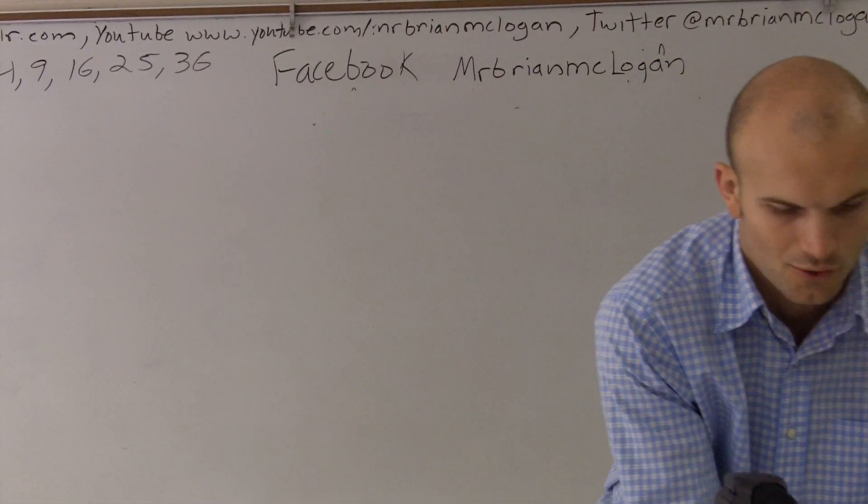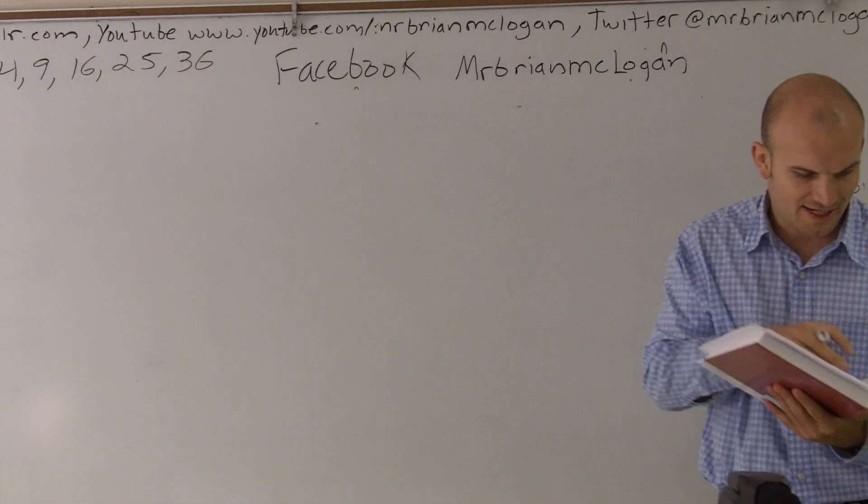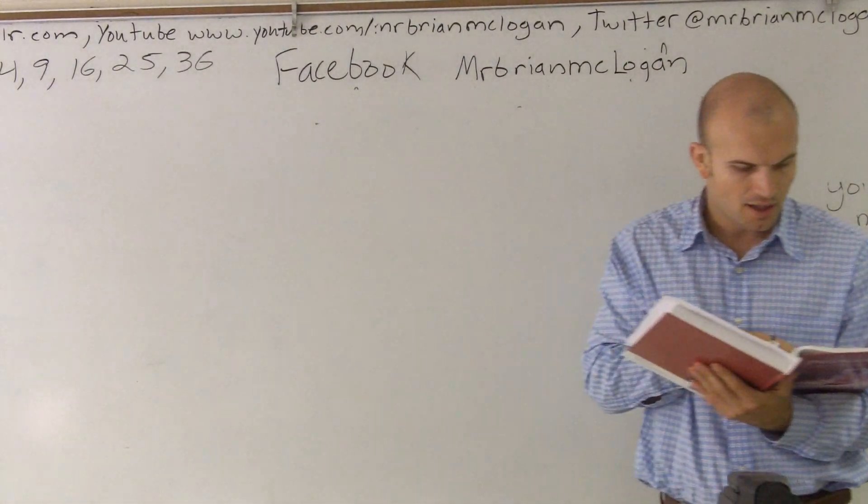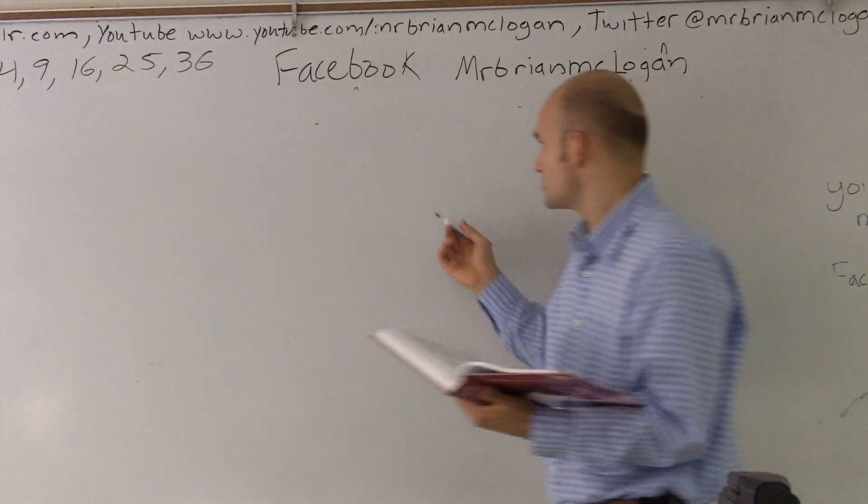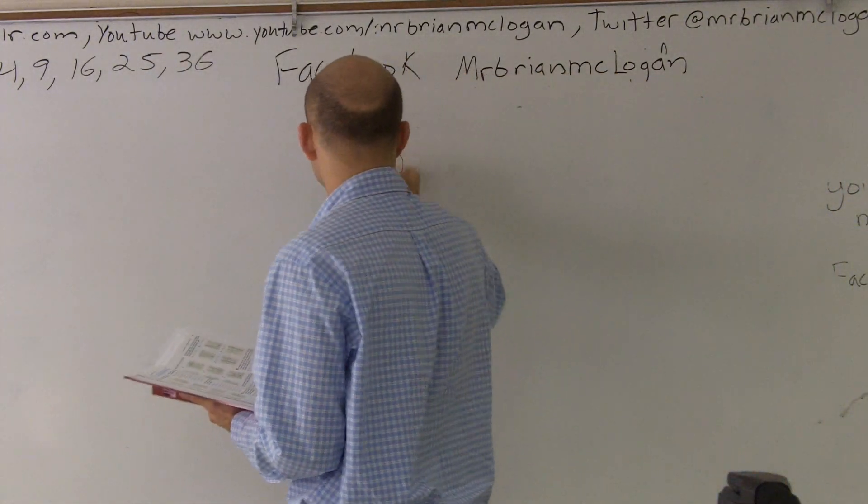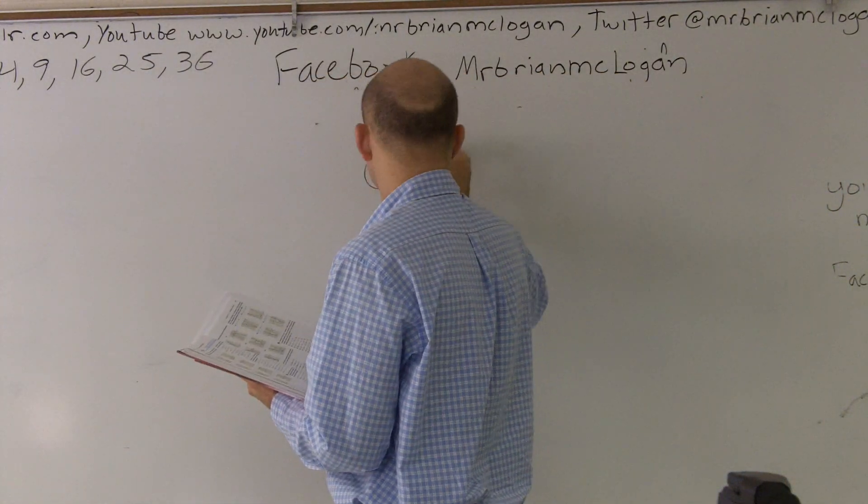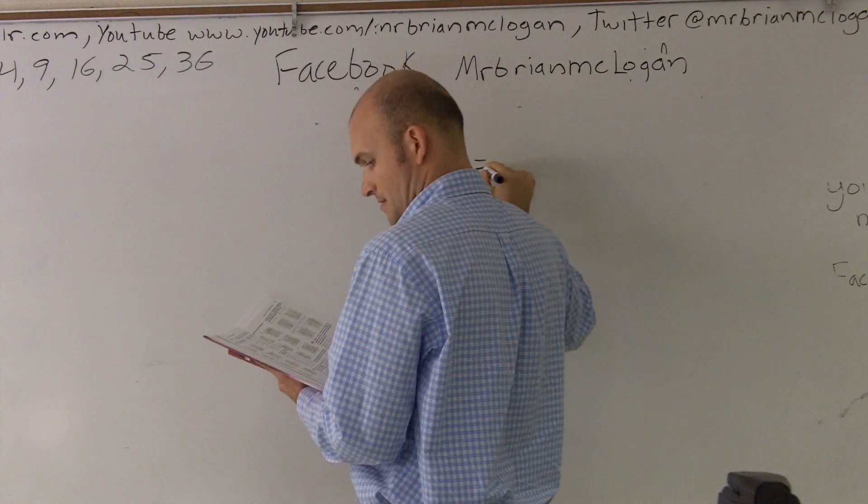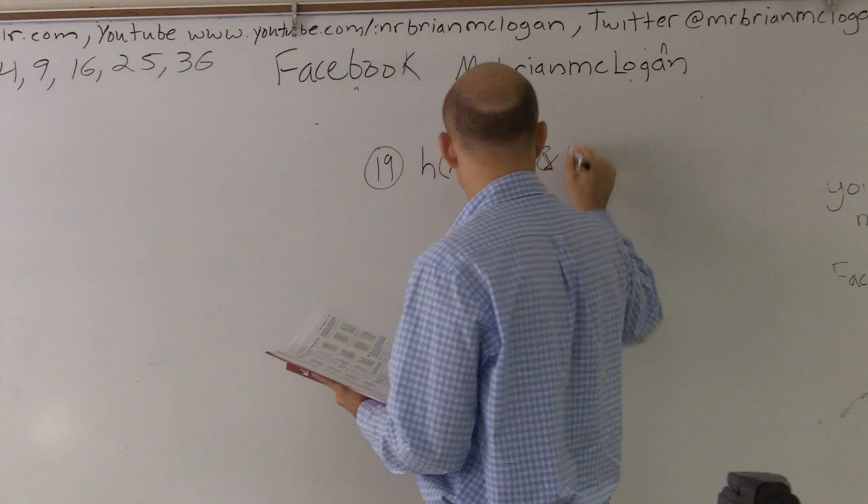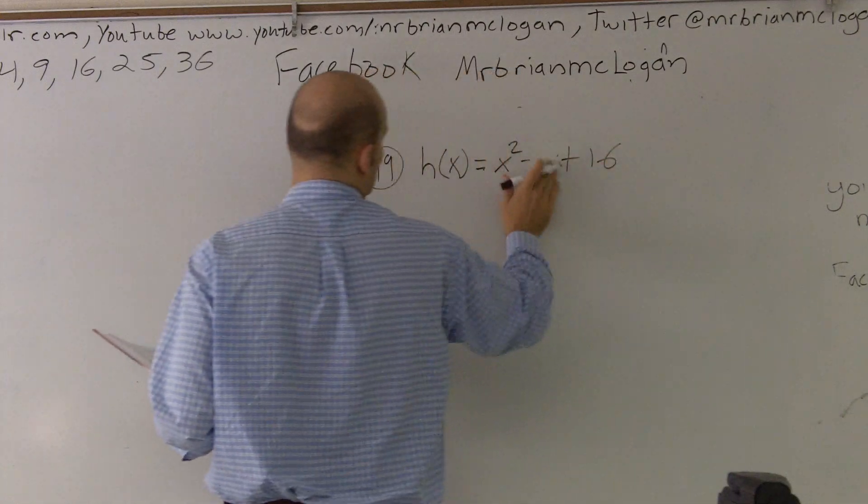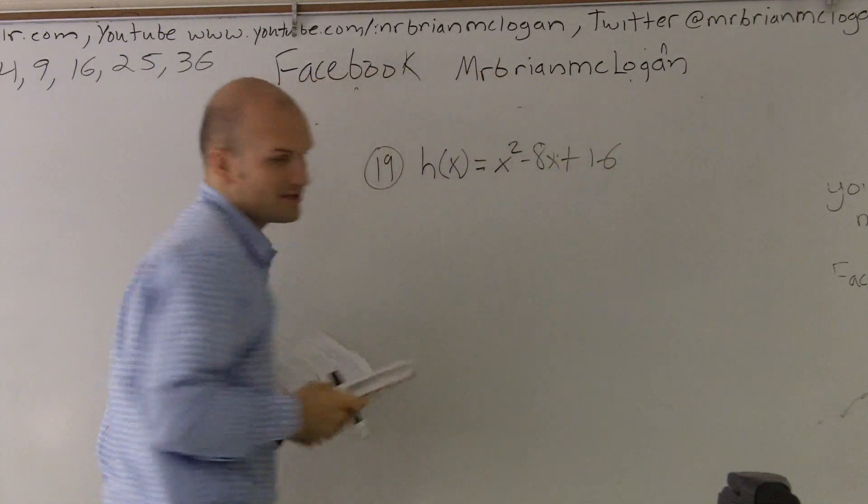All right, what we're going to do for this problem is sketch the graph of the quadratic function without using any graph utility. Identify the vertex and the x-intercepts. So what we're given in question number 19 is h(x) equals x squared minus 8x plus 16.